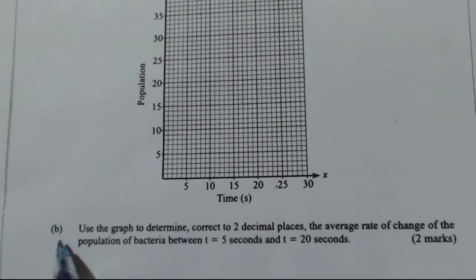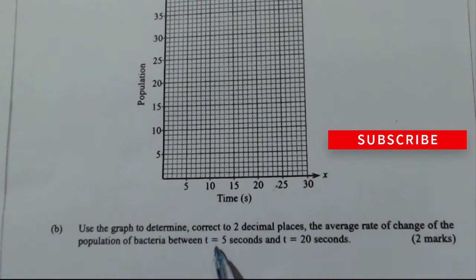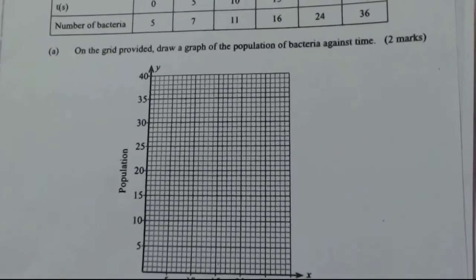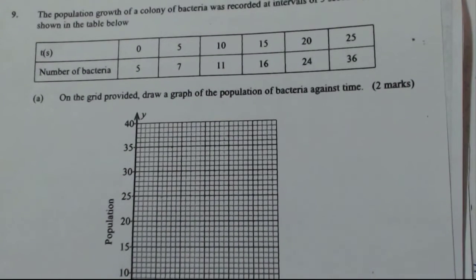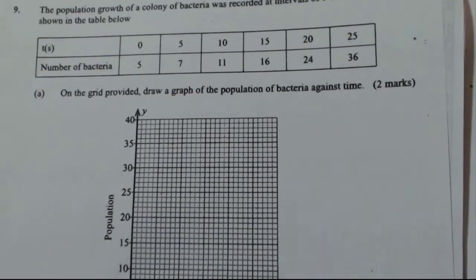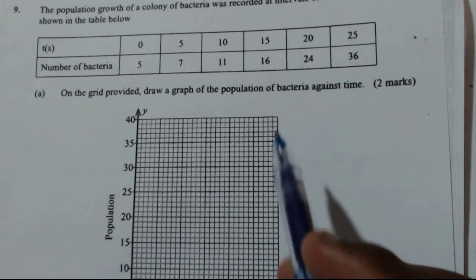Then B, use the graph to determine correct to two decimal places the average rate of change of the population of bacteria between T equals five seconds and T equals twenty seconds. So let's go to the first question. Drawing. This is just a matter of plotting.